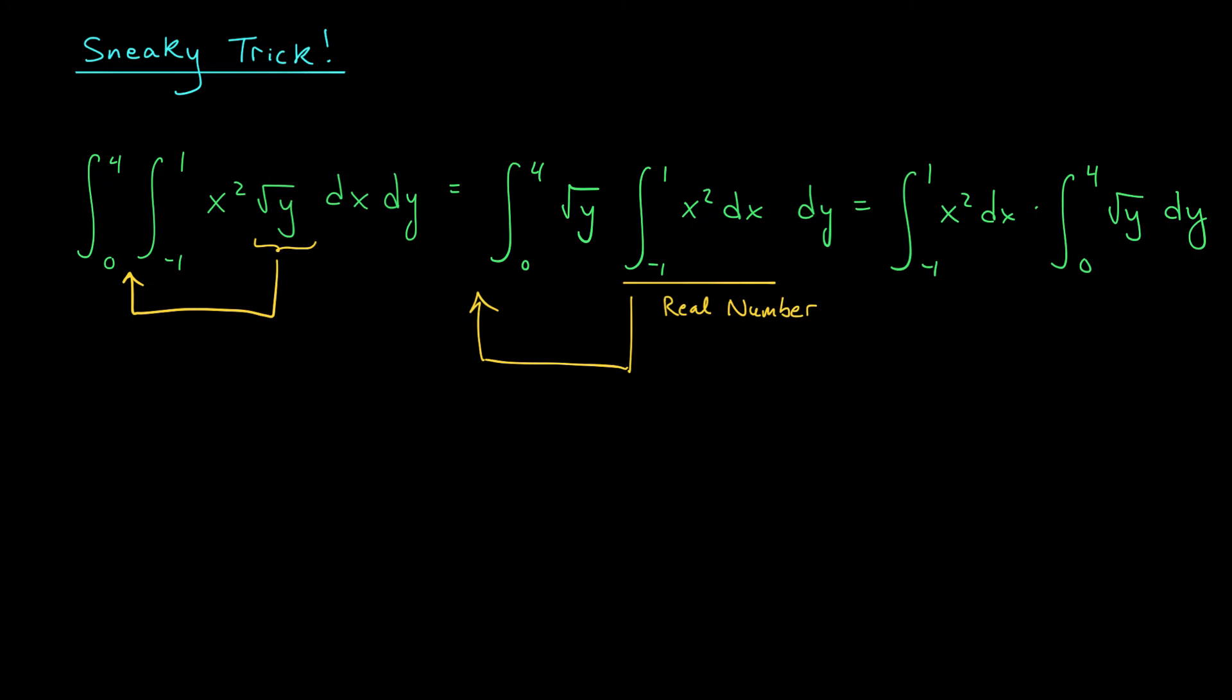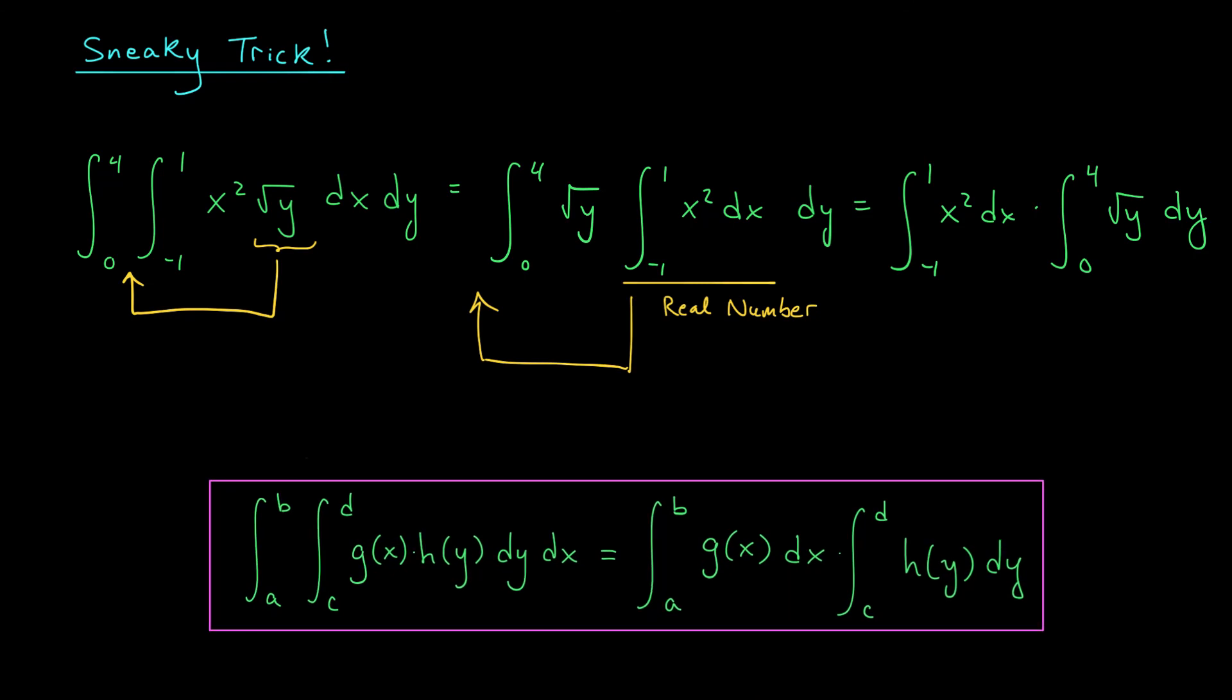In general, you can always do this when you're integrating over a rectangle, like we're doing here, and your integrand, this expression here, nicely factors into an x term and a y term. You can't have stuff that's all tangled up, but if it separates nicely, you can always do this little trick. So formally, if we have the integral from a to b of the integral from c to d of a product that separates nicely like this, g of x times h of y dy dx, we can always split it into the integral from a to b of g of x dx times the integral from c to d of h of y dy. Something to keep in mind.